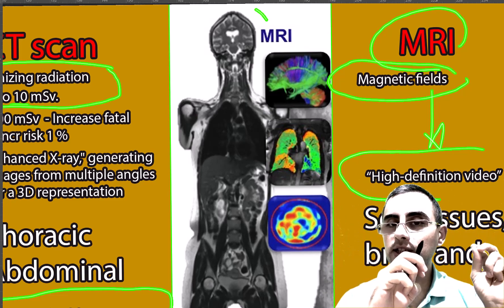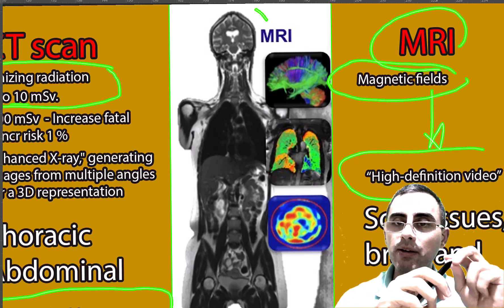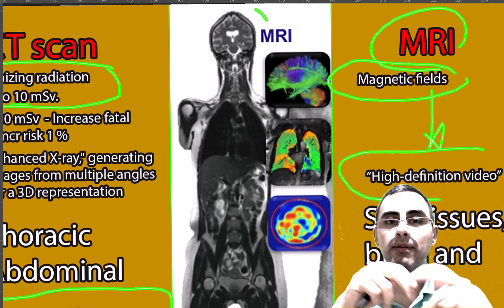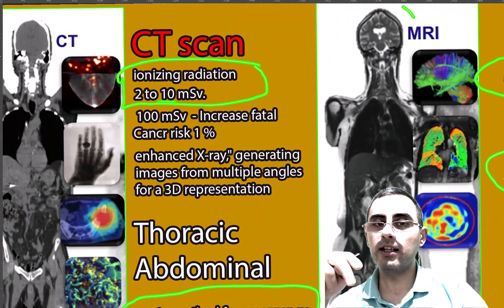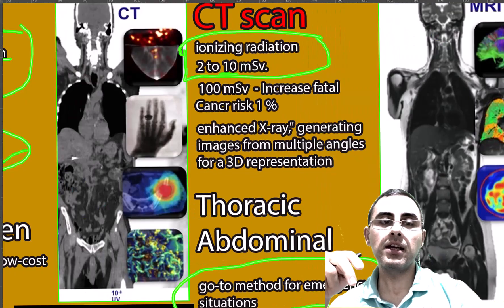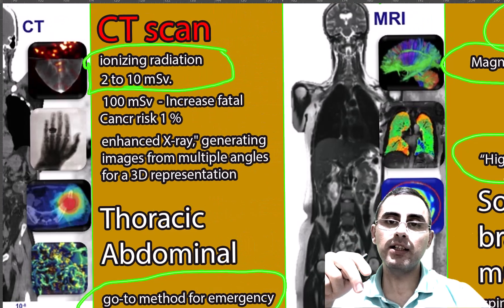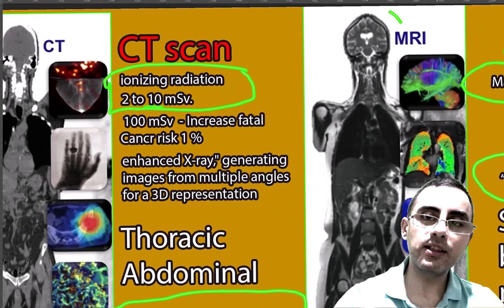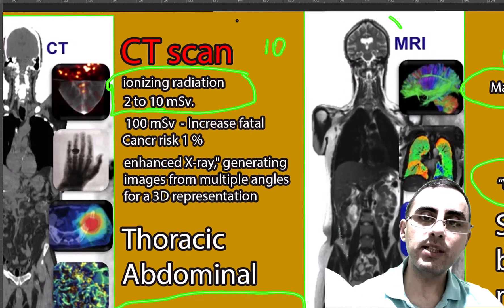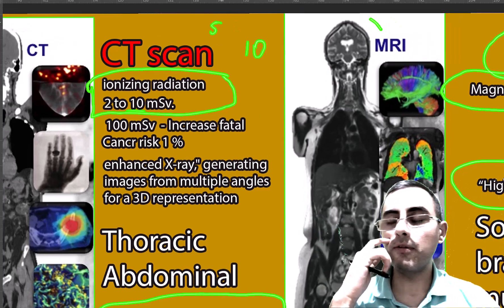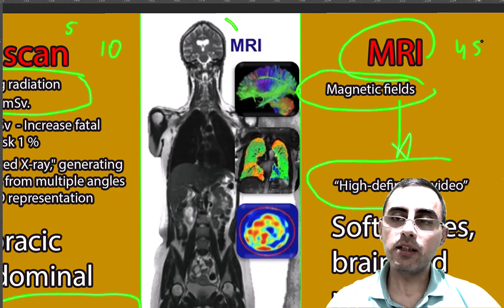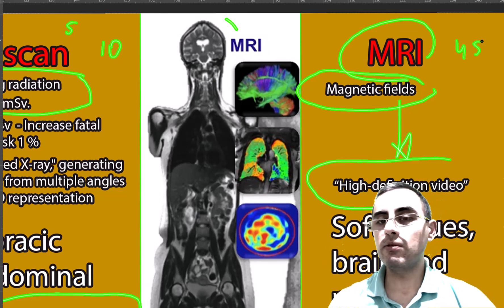To summarize: for soft tissue fine images, use MRI; for bones, use X-ray; for everything, use CT scan. CT scan is fast, X-ray is faster. Average duration of CT scan is around 10 minutes, X-ray around 5 minutes, and MRI around 45 minutes — and for people with claustrophobia, MRI is difficult.